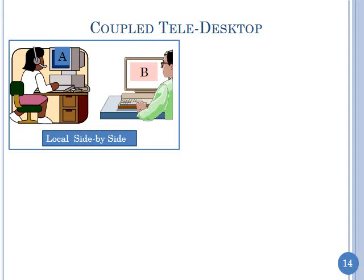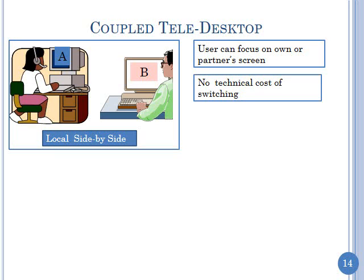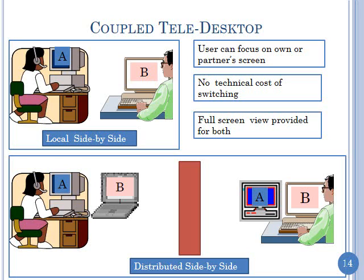The mechanism we designed is based on the metaphor of local side-by-side collaboration, which occurs between two users whose workstations are right next to each other. You can focus on your own screen and do individual work, or look at your partner's screen and do group work. There is no technical cost of switching — I just look. Each user is provided a full-screen view of their workstation, so it is unbiased.